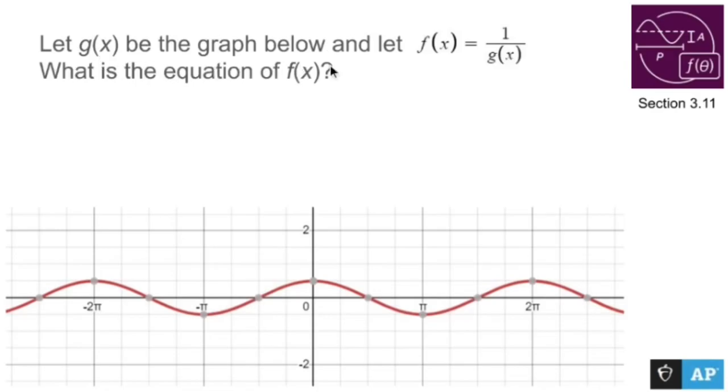Let g of x be the graph below and let f of x equals 1 over g of x. What is the equation of f of x? All right, well this is g of x, so it looks to me...